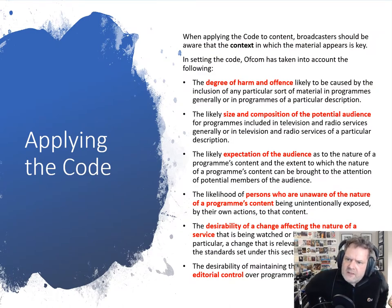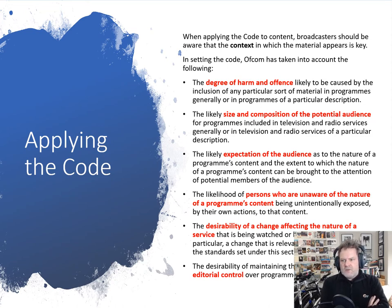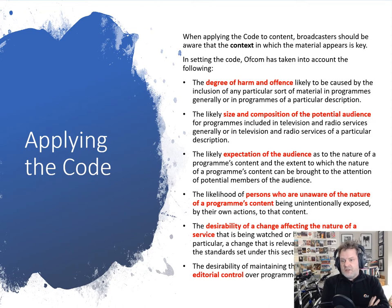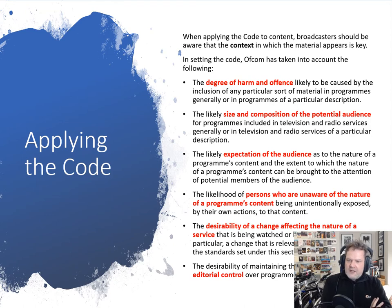When applying the code, Ofcom takes a number of things into context — a list of criteria that it considers as they interact with each other. What is the degree of harm and offence likely to be caused by the inclusion of particular material? Ofcom will then consider the size and composition of the potential audience — who is likely to be listening — and what the expectations of that audience are likely to be. For example, if you're doing a late-night politics discussion programme, you'd generally expect children aren't listening at that time of evening, so topics could be more adult-referenced than they would be in the daytime.